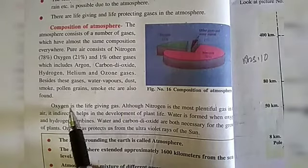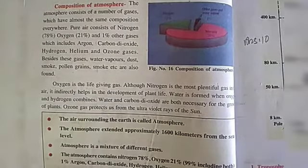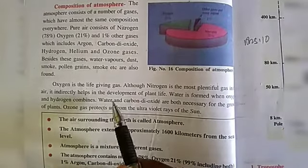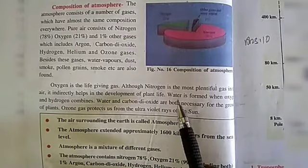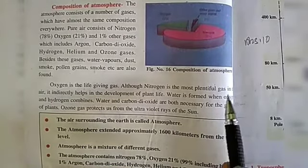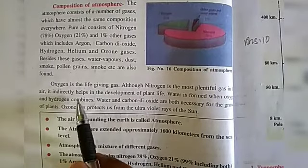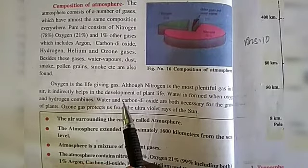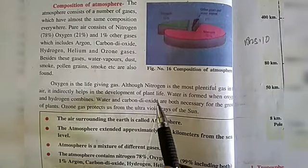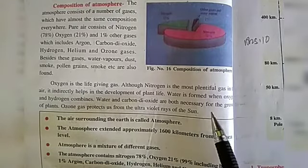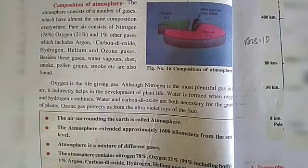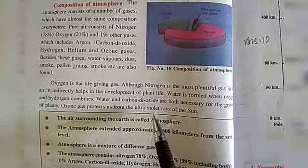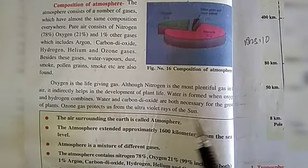Besides these gases, water vapors, dust, smoke, and pollen grains are also found. Oxygen is the life-giving gas. Although nitrogen is the most plentiful gas in the air, it indirectly helps in the development of plant life.